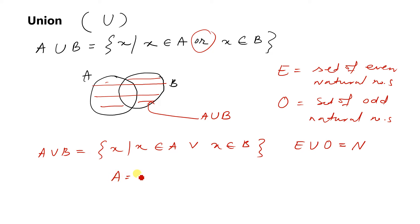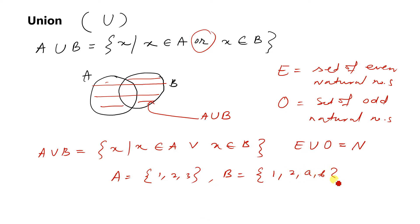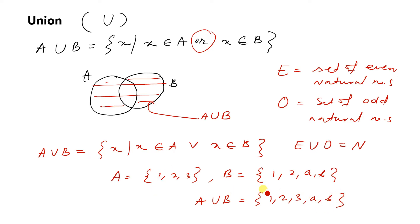Another example: let A = {1, 2, 3} and B = {1, 2, a, b}. Then A union B = {1, 2, 3, a, b}. Here A and B are not disjoint because 1 and 2 are common elements.